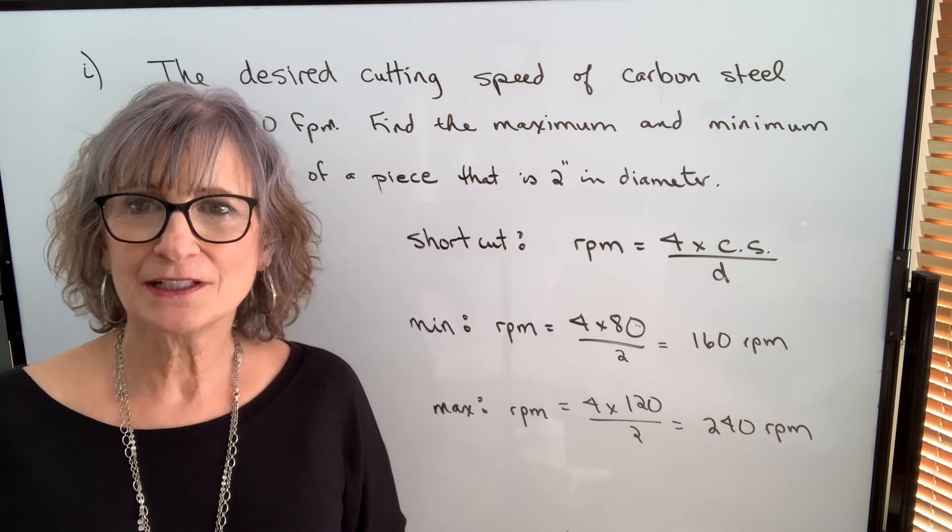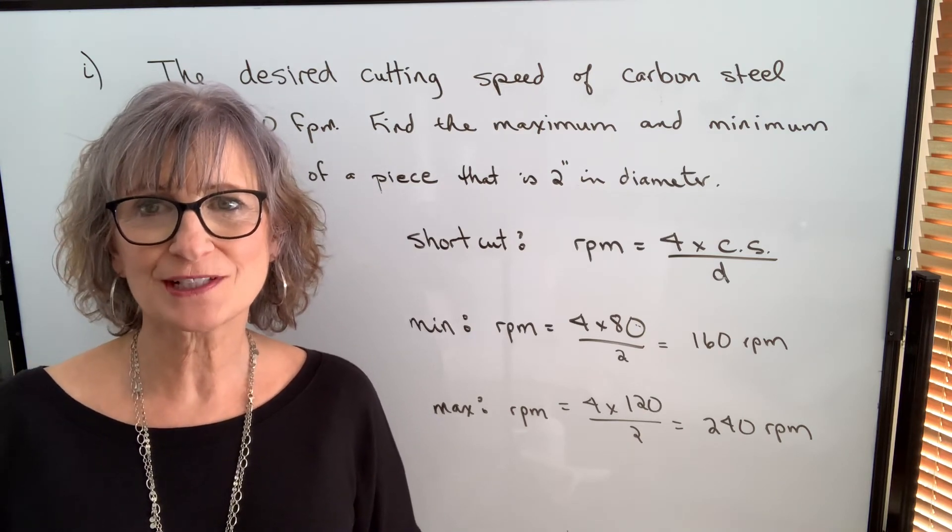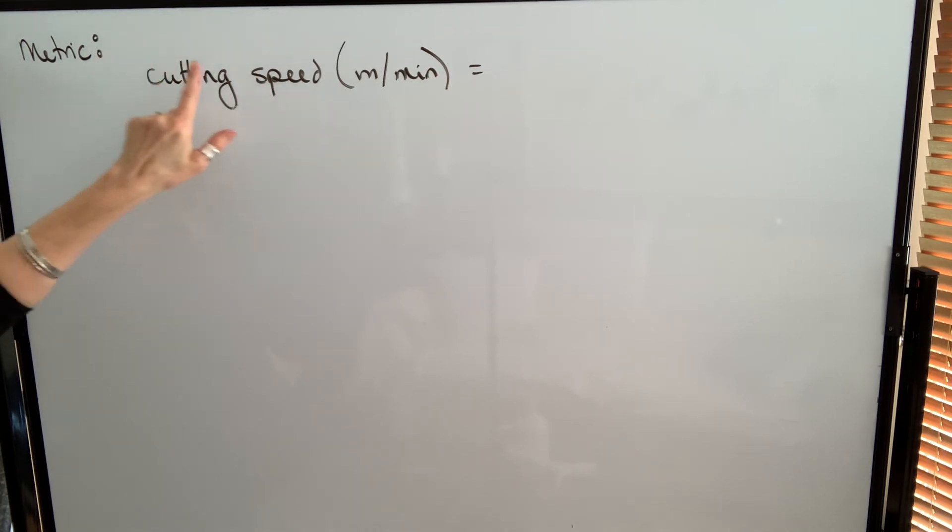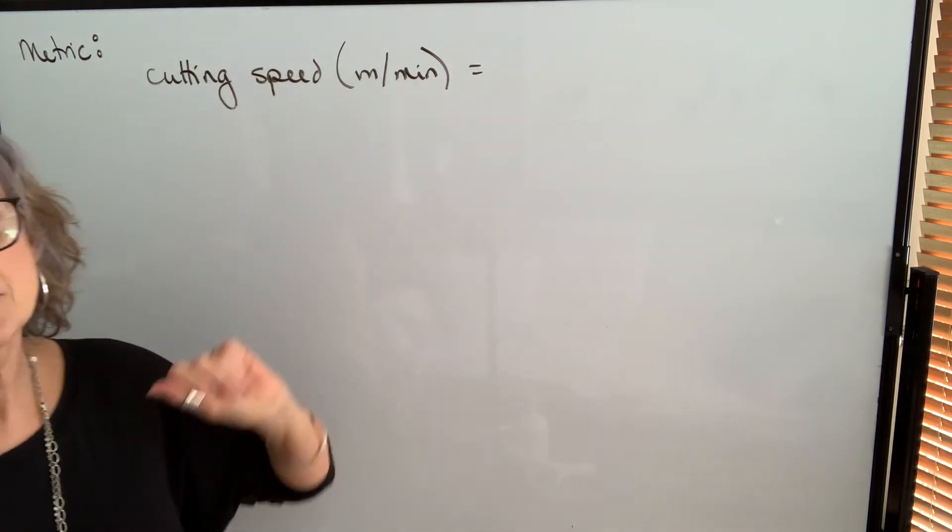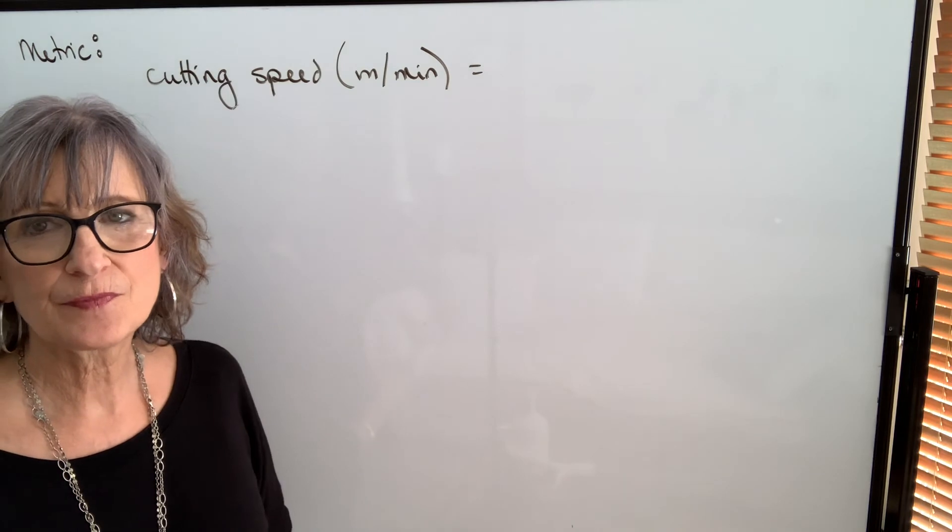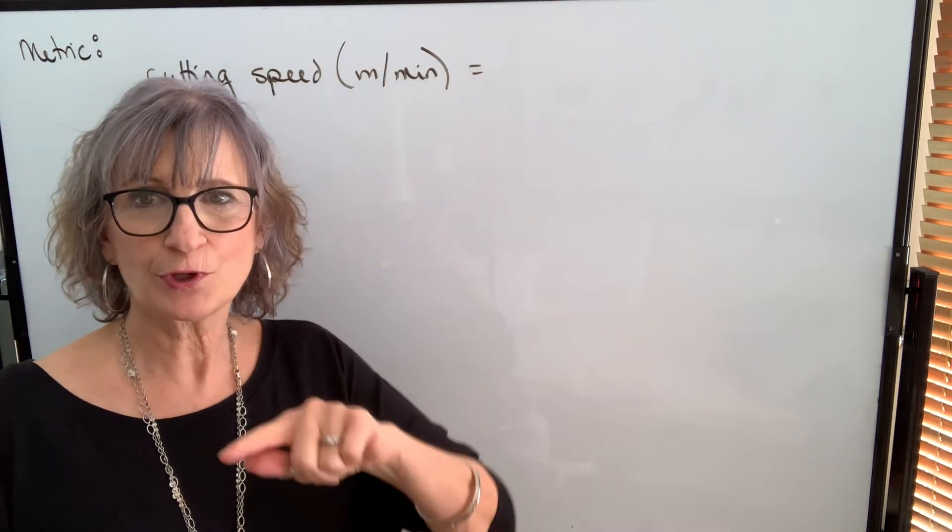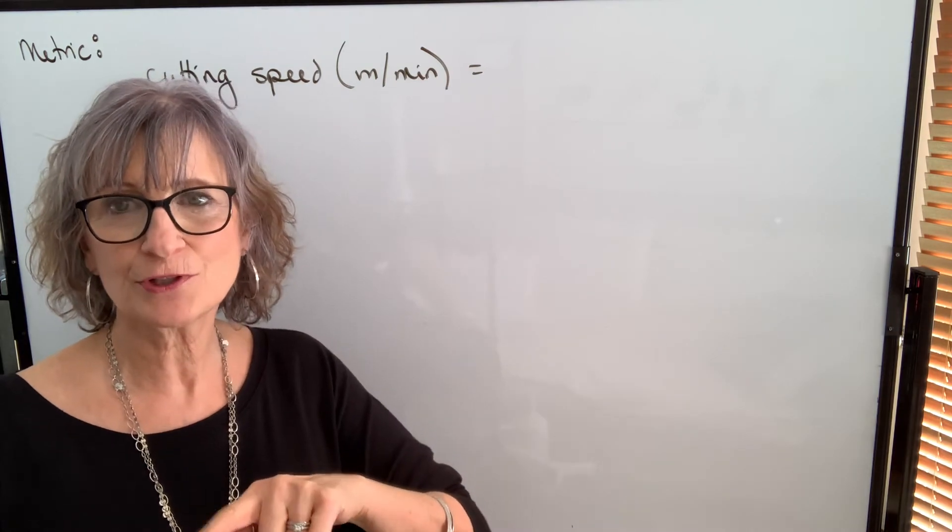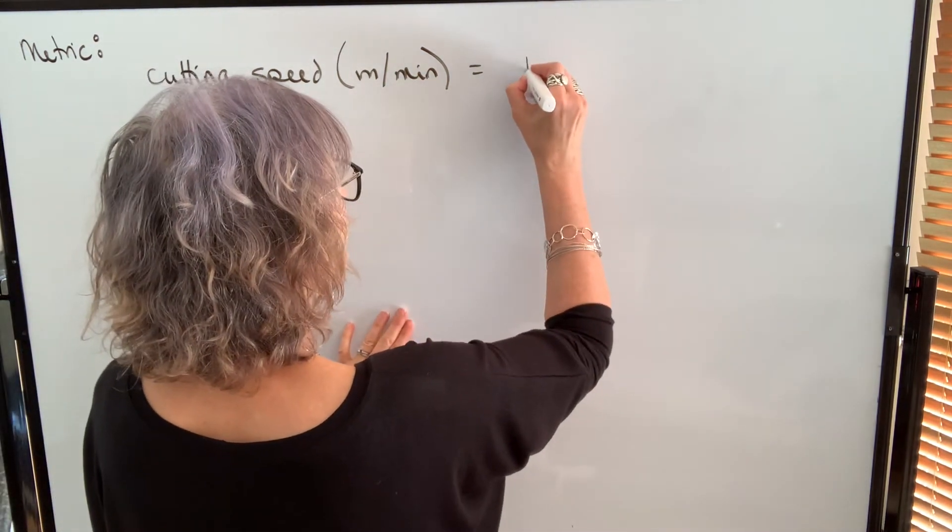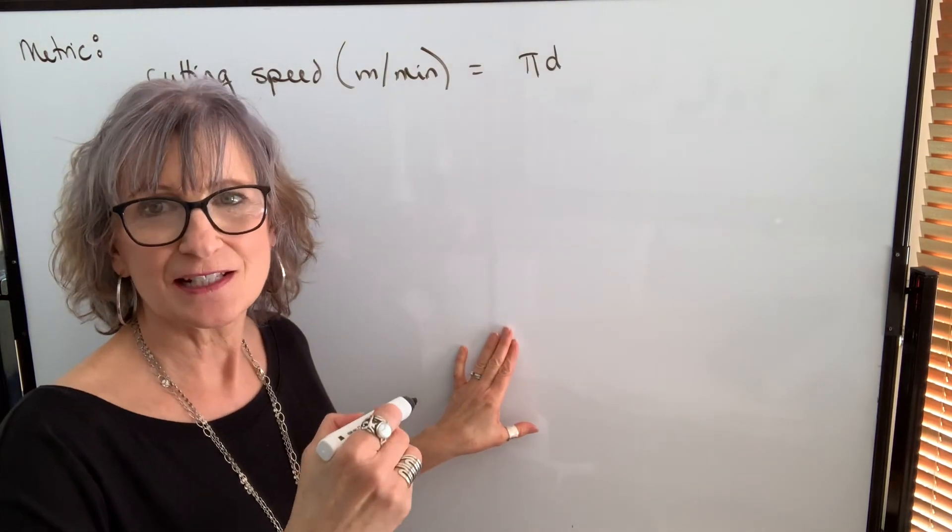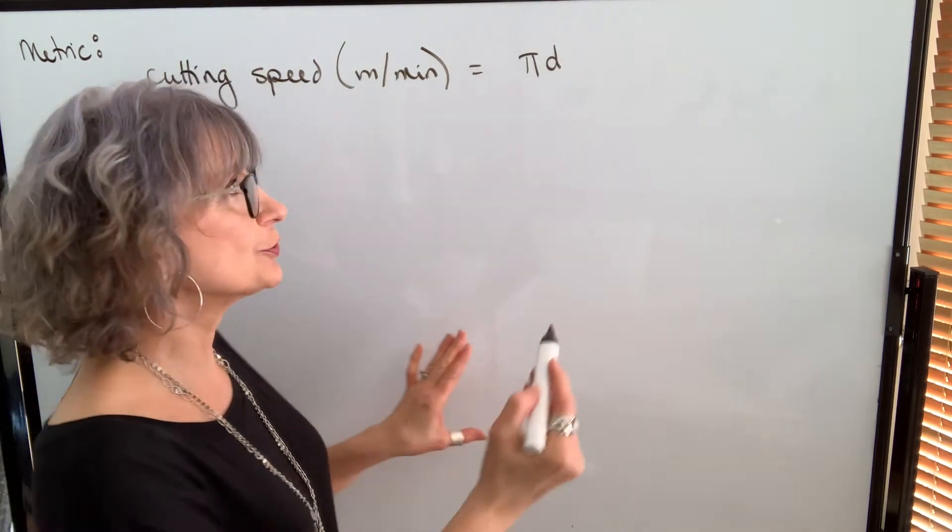Let's take a look at finding cutting speed if you're working with metric units. If you're working with cutting speed in metric units, your cutting speeds usually will be listed at meters per minute. And we're still going to use the process of finding that cutting speed. We're going to take the distance around a circle, which is circumference, which is π times diameter.